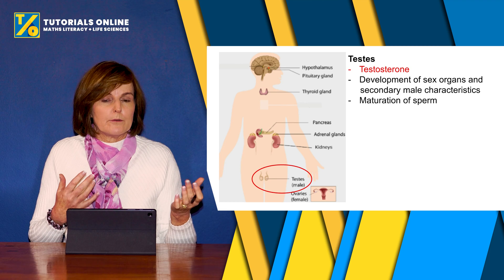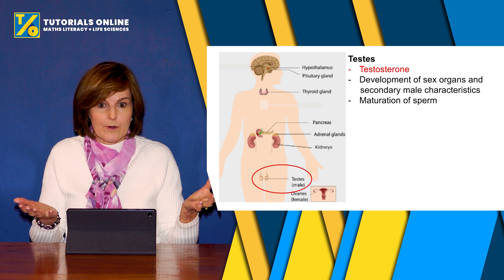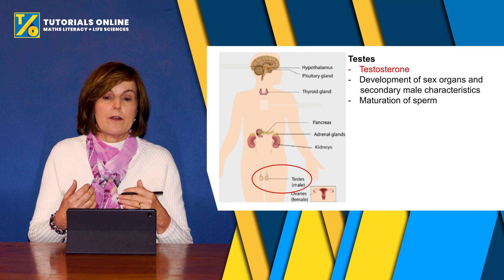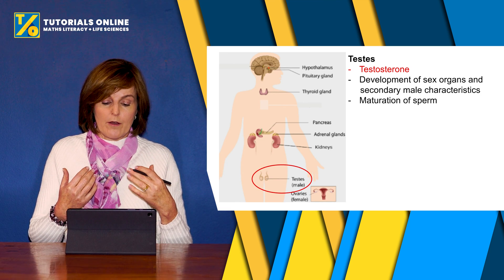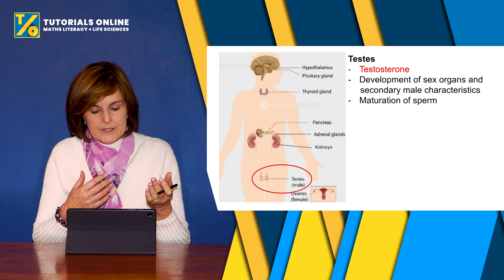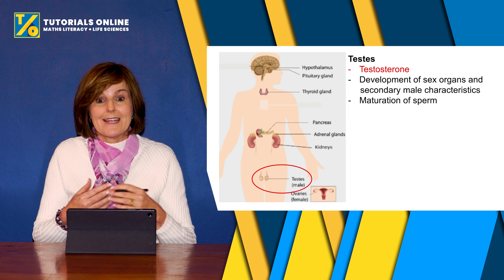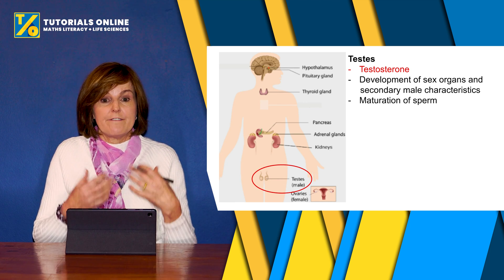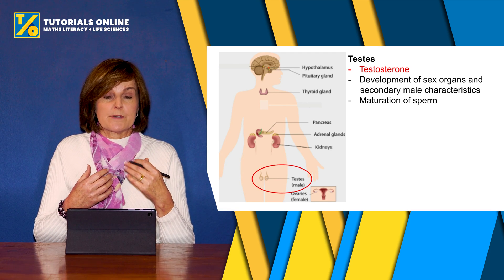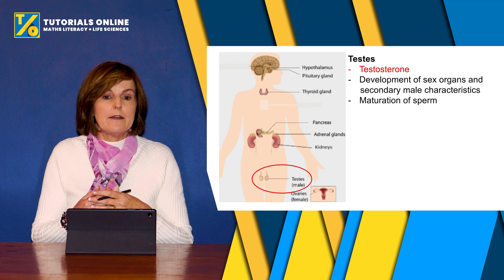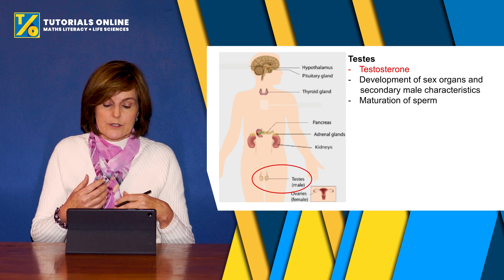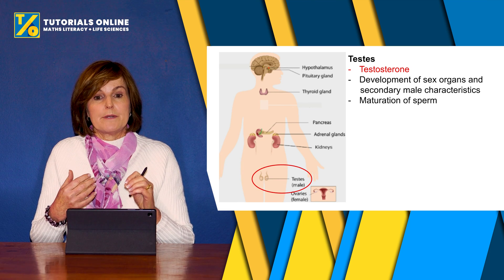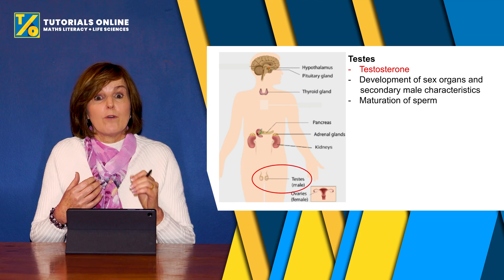Females have those four hormones, but males are much simpler — we're just going to look at one main hormone: testosterone. Testosterone is produced in the testes and influences the development of the sex organs and secondary male characteristics like a deeper voice and facial hair, as well as the maturation of sperm cells.